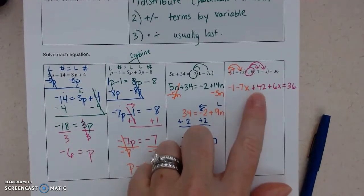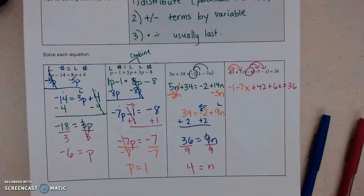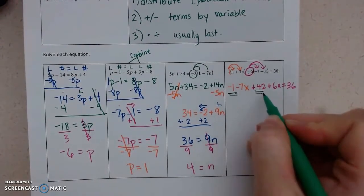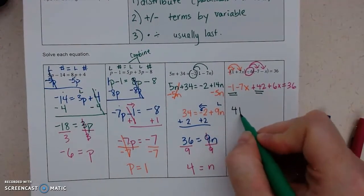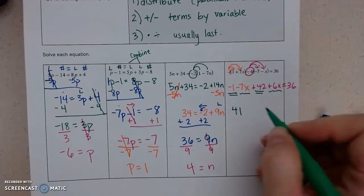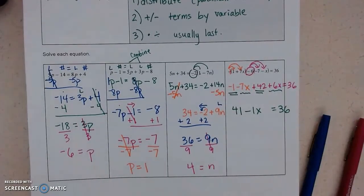So now you can see I have numbers that I need to combine, and I have letters that we combine. And you don't do the opposite. You do what they are. So this is negative 1 plus 42, which is 41. And then this is negative 7x plus 6, which is negative 1x.